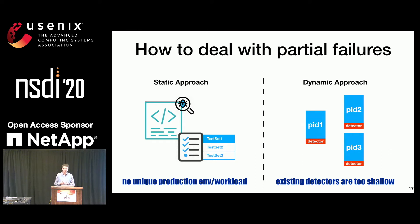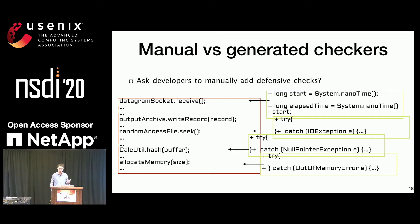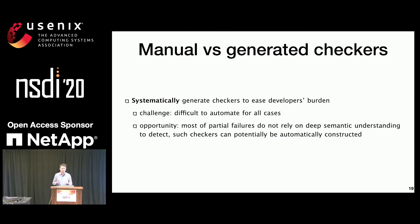Our study shows that partial failures are common and severe. So how to deal with them? Partial failures are often exposed only with unique production workloads, so it is hard to eliminate them in static testing. But current dynamic detectors are too shallow. We need more powerful and customized detectors to expose runtime issues. Asking developers to manually write more defensive checks would help, but it is unrealistic to check every operation in the system. So what we want is to systematically generate such checkers to ease their burden.